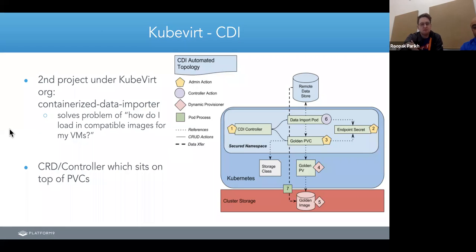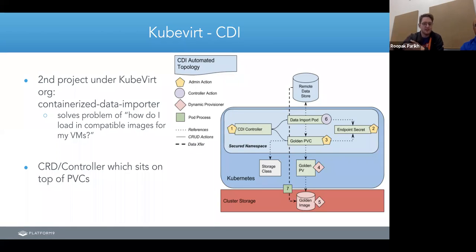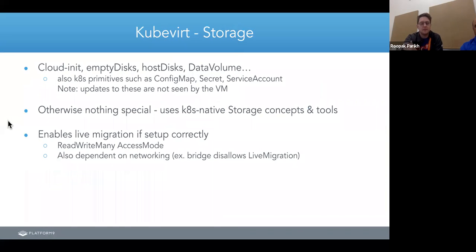Under the KubeVirt organization there's a second repo called CDI - Containerized Data Importer - which makes uploading and cloning of images simpler. It's a CRD that sits on top of PVC and is called the Data Volume. The most common use case is having a golden image that your VMs can reference.